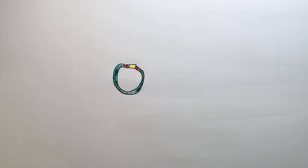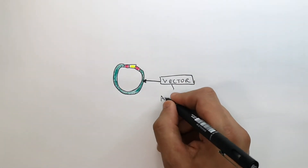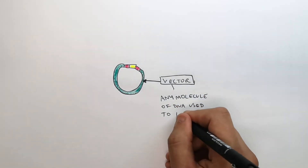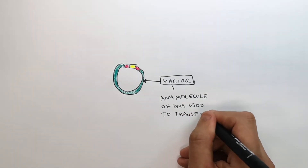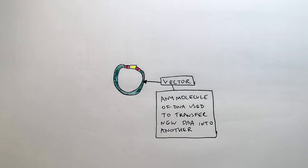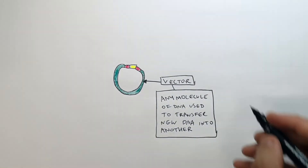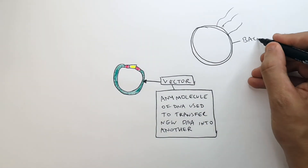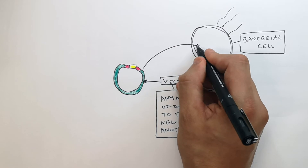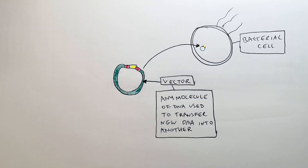We now have recombinant DNA in a vector. A vector is any molecule of DNA used to transfer new DNA into another organism. So now what we've got is our bacteria, and we're going to put this vector — which has our insulin gene — back into the bacterial cell.